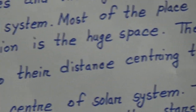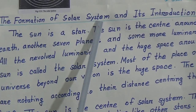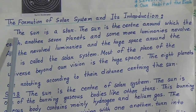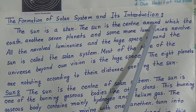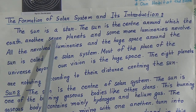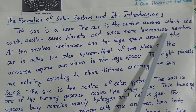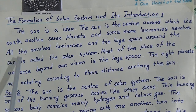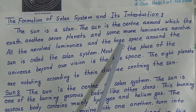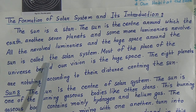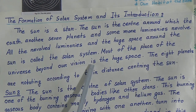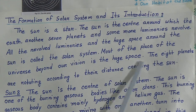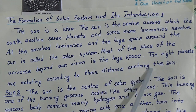First topic: the formation of the solar system and its introduction. The sun is a star. The sun is the center around which the earth, another 7 planets, and some more luminaries revolve. All the revolving luminaries and the huge space around the sun is called the solar system. The 8 planets are rotating according to their distance from the sun.